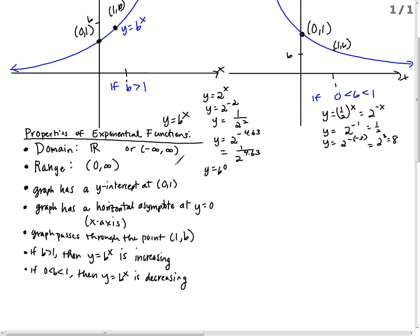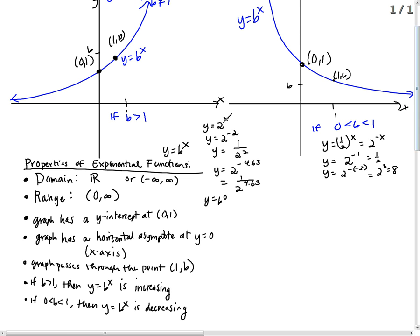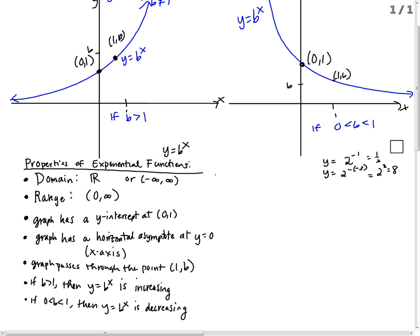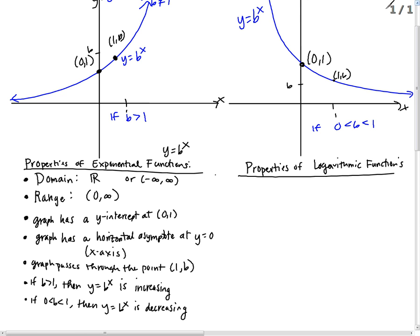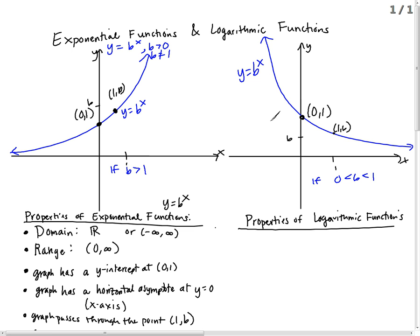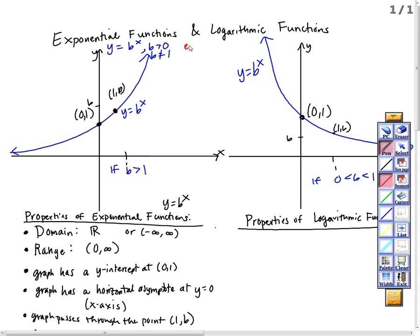Now we're going to compare this to logarithms. If I look at logarithmic functions, I want to see what's happening there. Can you see that both pictures are graphs of a one-to-one function? They pass the vertical line test — that means they're a function. But they also pass the horizontal line test. Any horizontal line I draw will pass through the graph only once. So exponential functions are one-to-one.